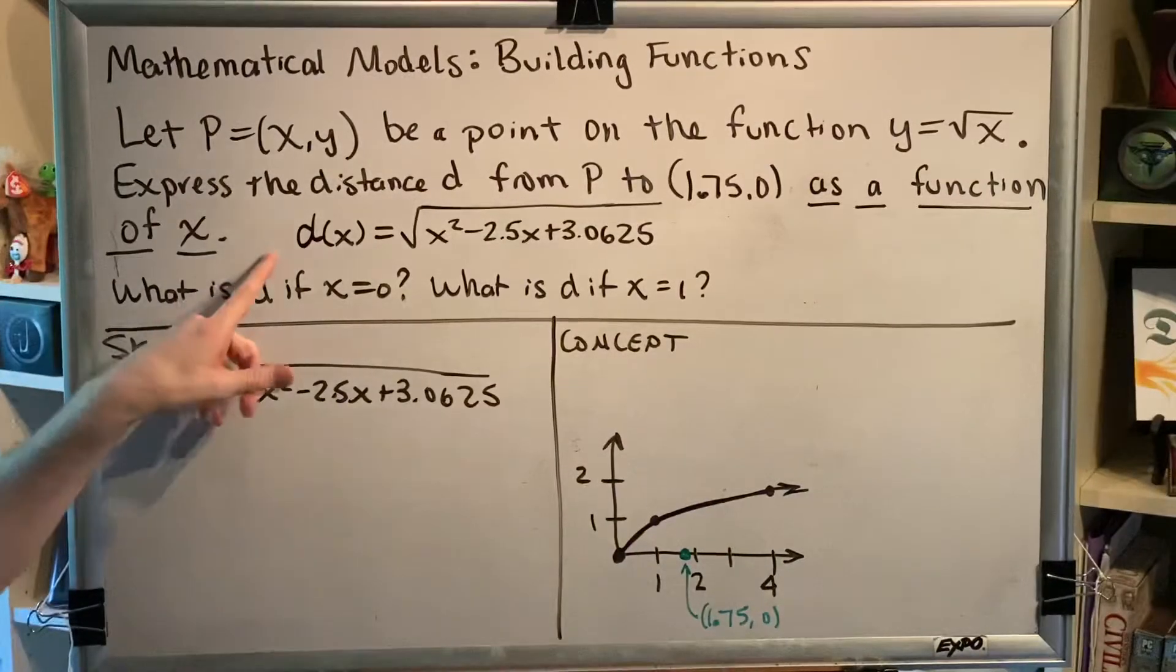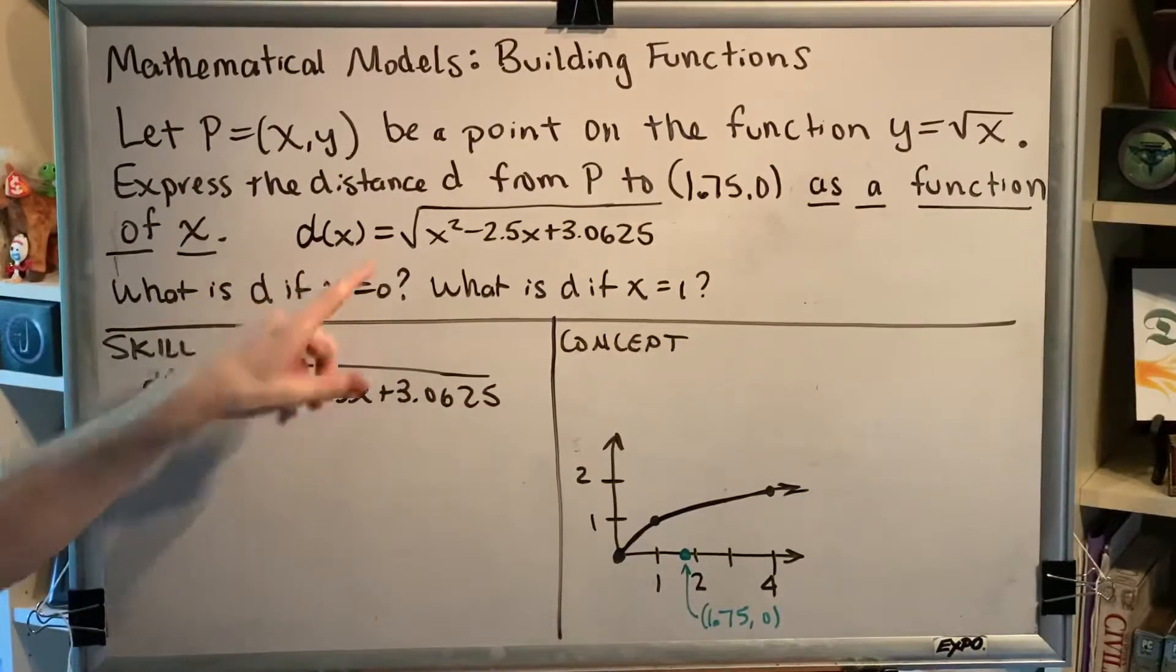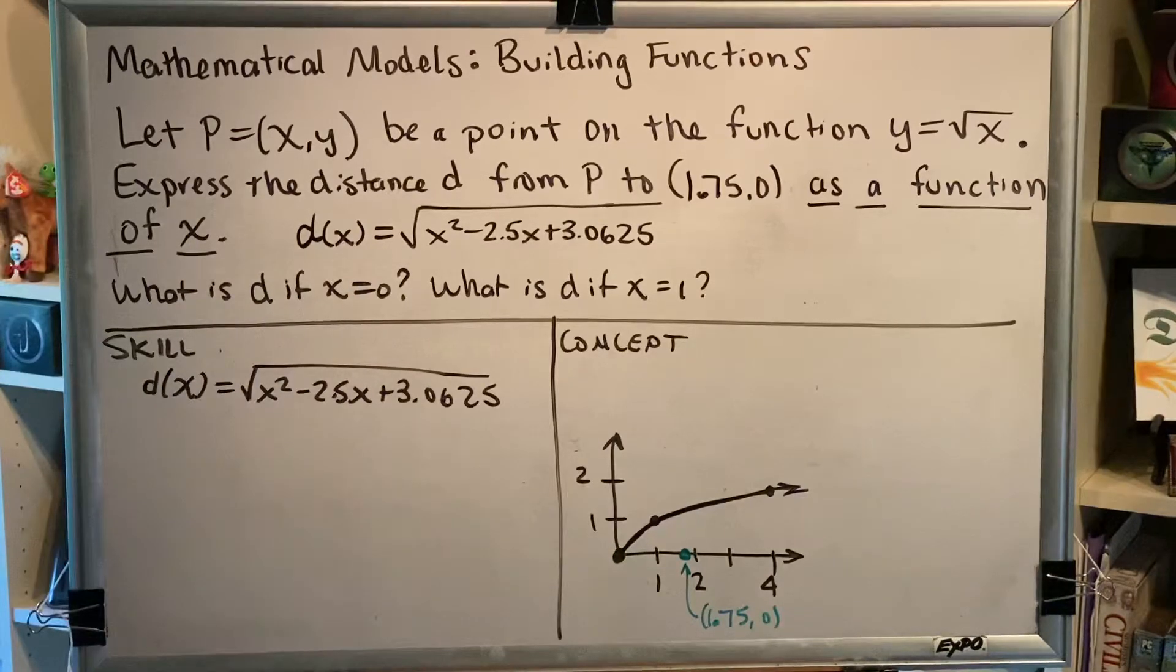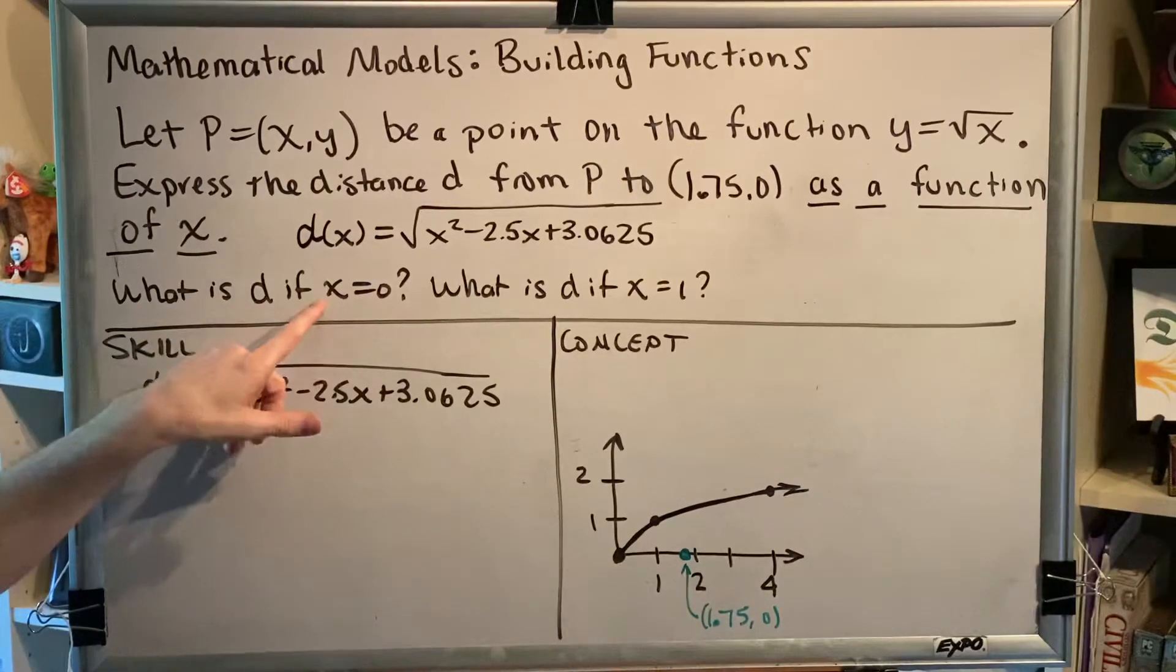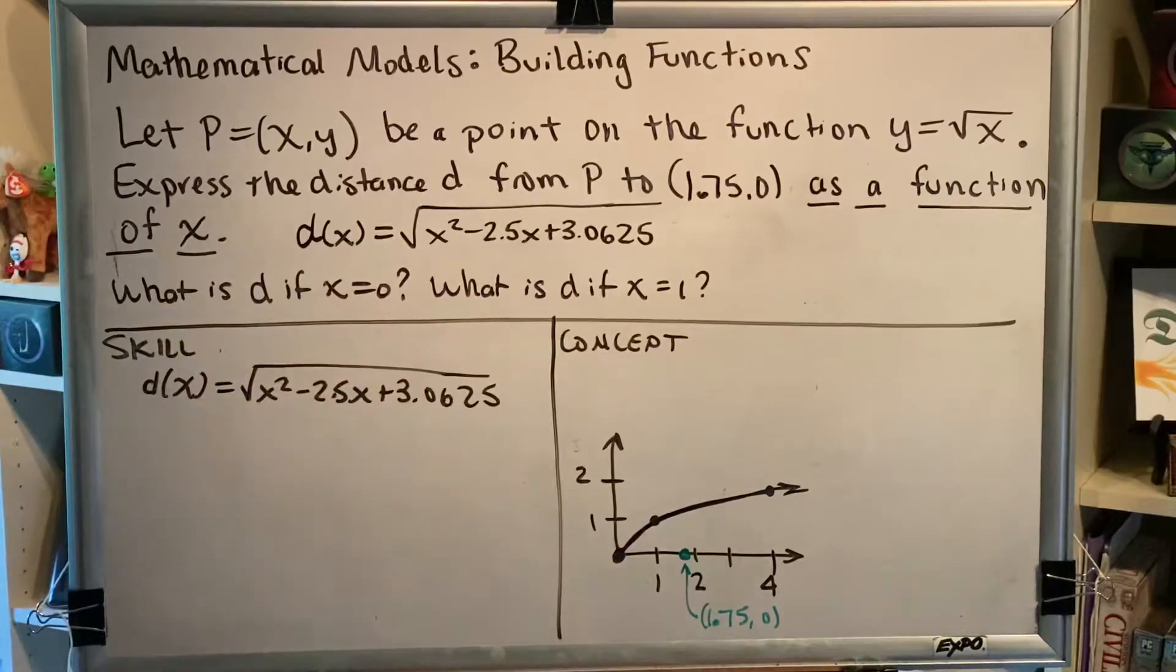Okay, so we did that and we got our answer. d(x) is equal to the square root of x squared minus 2.5x plus 3.0625. We're now ready to move on to the next part of the problem which says, what is d if x equals 0? What is d if x equals 1?